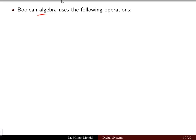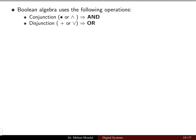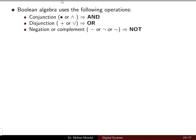Boolean algebra uses the following operations. The first is the AND operation, also called conjunction, denoted by a dot or an inverted V symbol. The second is OR, a disjunction denoted by a plus or V symbol. The inverted V is used for AND and the V is used for OR. The third basic operation is NOT, which is the negation or complement, represented by a dash or bar symbol.